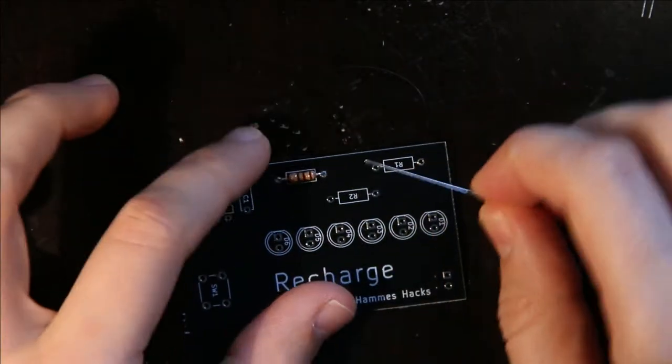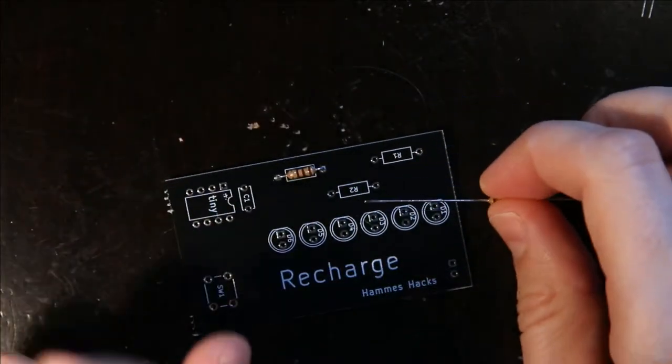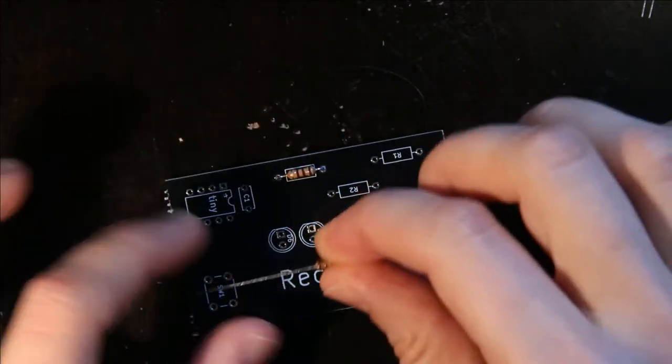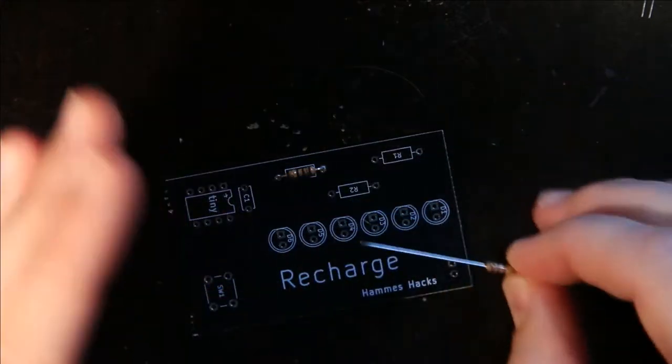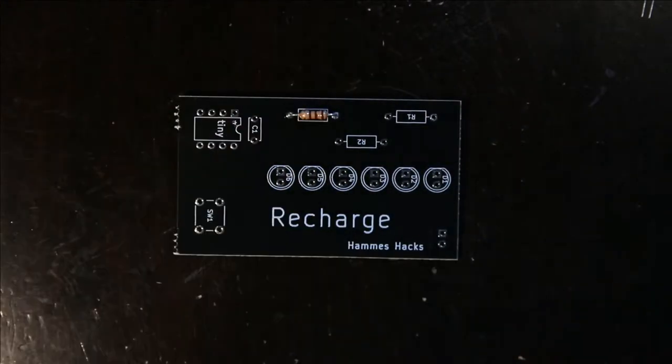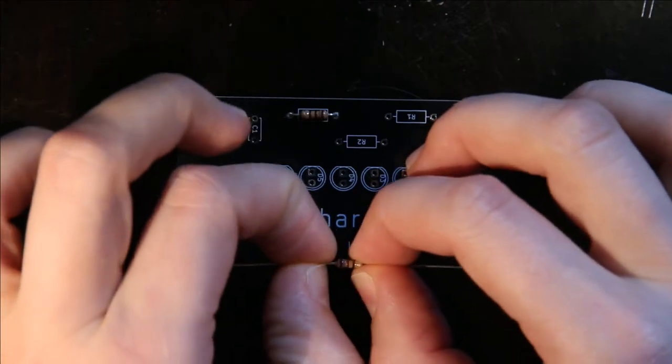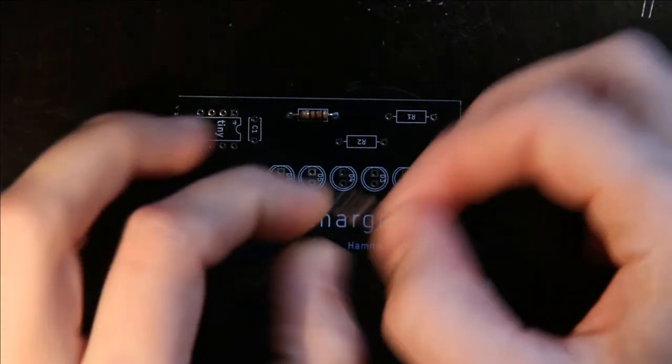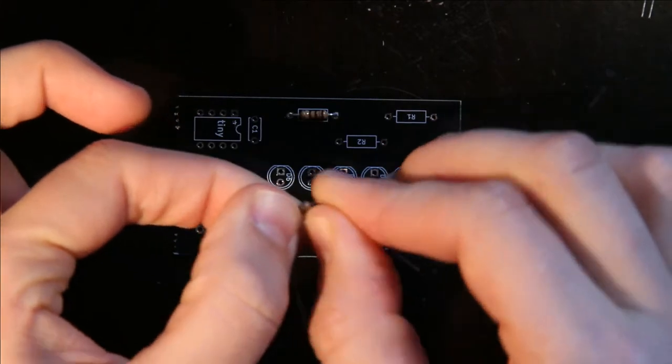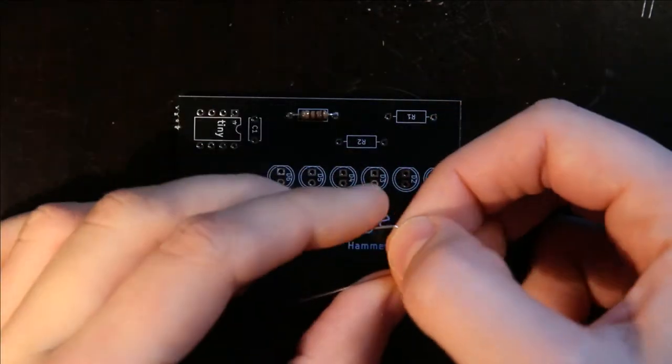My recommendation is always to start with the flattest parts, or the parts that stick out the least, and work your way to taller parts while leaving the leads at right angles to the board. So I just go ahead and solder all the resistors in the same way.